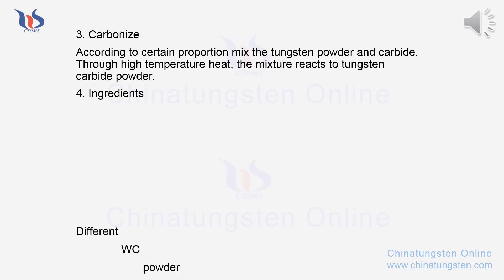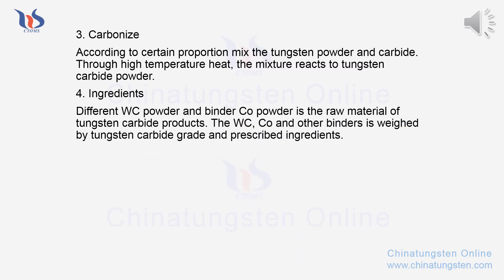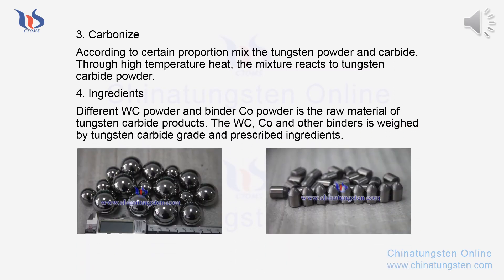Step 4 - Ingredients: Different WC powder and binder Co powder are the raw materials of tungsten carbide products. The WC, Co, and other binders are weighed according to tungsten carbide grade and prescribed ingredient ratios.